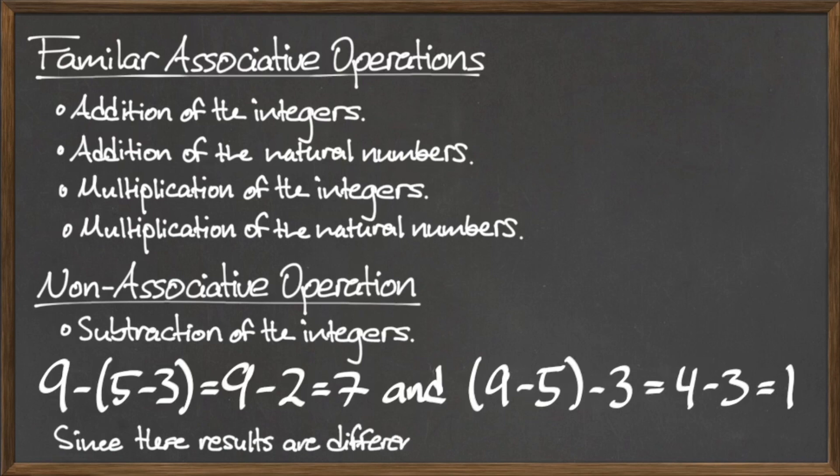However, the quantity 9 minus 5 minus 3 is equal to 4 minus 3, which is 1. Since these results are different, subtraction on integers is not associative.